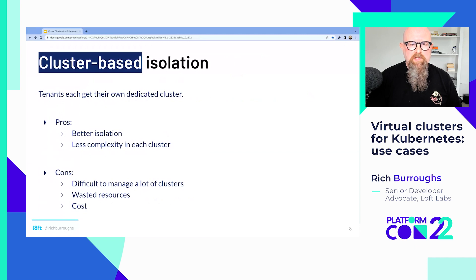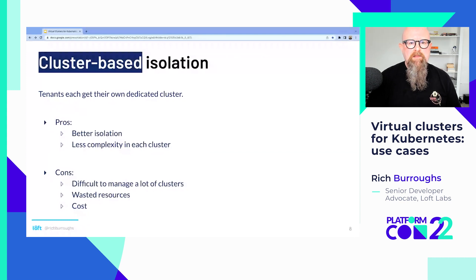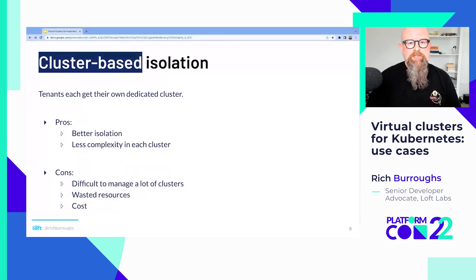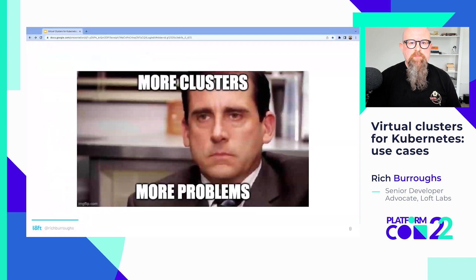And then there's cluster-based isolation — this is Oprah telling you to look under your chair: everybody gets their own cluster. Some pros are better isolation, which can be a big deal in a highly regulated environment, and less complexity inside each cluster. One tenant means less things running, less network policies, and it's a lot easier to reason about what's happening. But the cons are that it's really hard to manage a lot of Kubernetes clusters — which ones are being used, which should have been decommissioned — which ends up with wasted resources and more cost. As Michael Scott would say, more clusters, more problems.